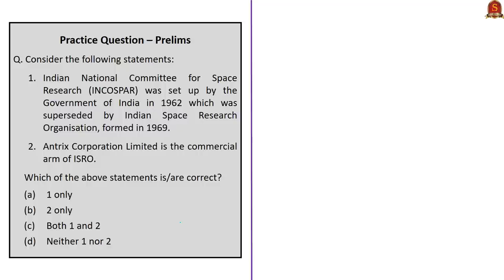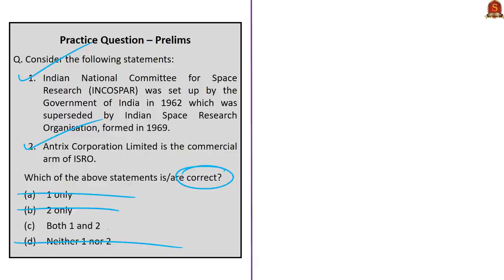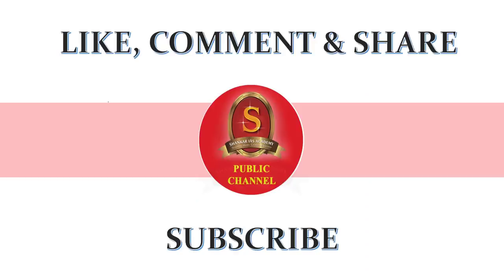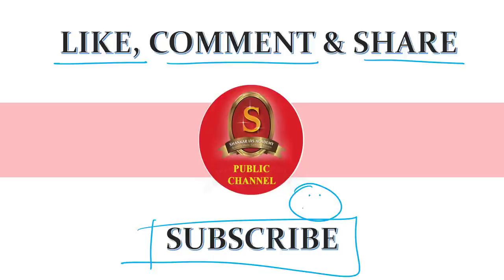Question five on ISRO: Statement one — the Indian National Committee for Space Research was set up by the Government of India in 1962 and was superseded by ISRO formed in 1969; this is correct. Statement two — Antrix Corporation Limited is the commercial arm of ISRO; this is correct. In addition to Antrix Corporation Limited, New Space India Limited is also a commercial arm of ISRO. The correct answer is option C — both statements are correct. There are two mains practice questions provided; viewers can post answers in the comment section. This concludes today's The Hindu news analysis by Shankar IAS Academy.